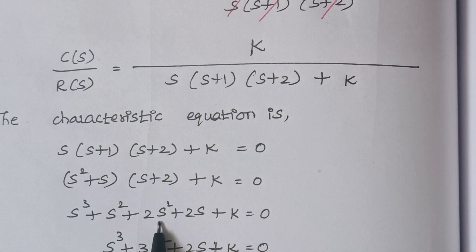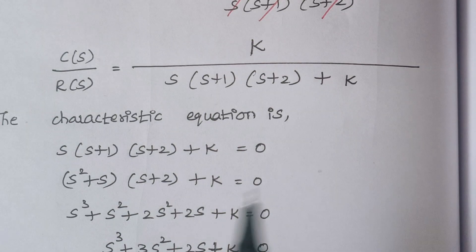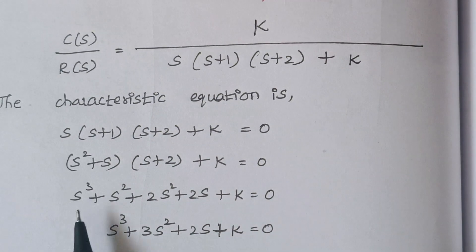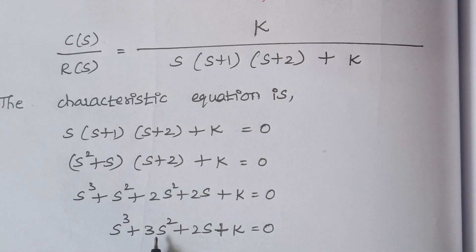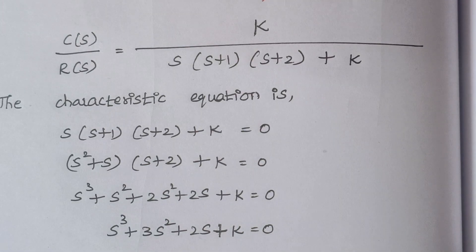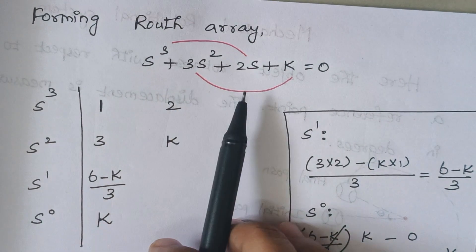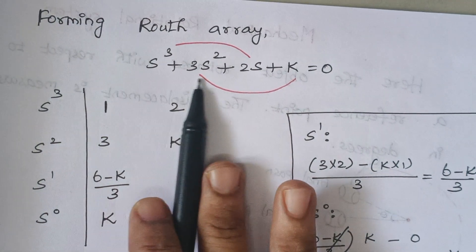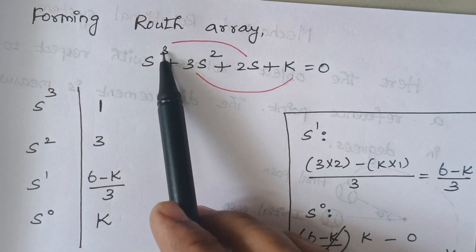Expanding further: s²·2 gives 2s² and s·2 gives 2s, plus K = 0. Simplifying, we get s³ + 3s² + 2s + K = 0. This is our final characteristic equation. From it we are going to form the Routh array, with the maximum power being s³.